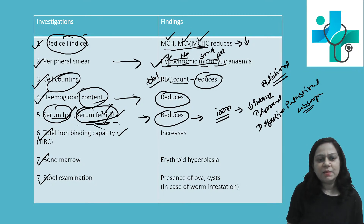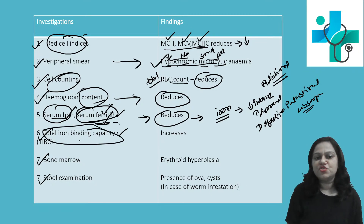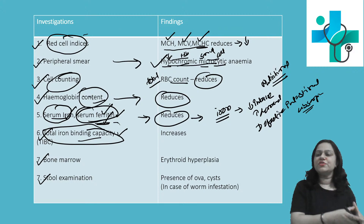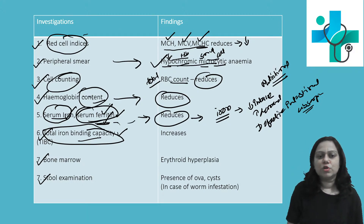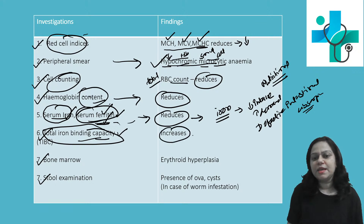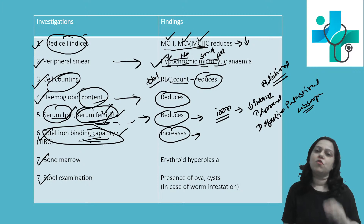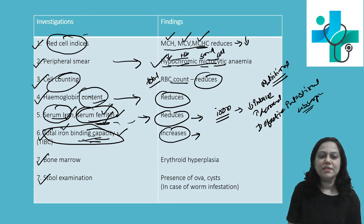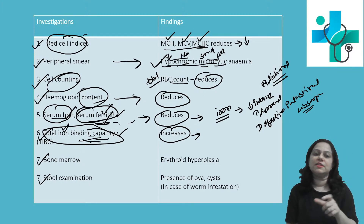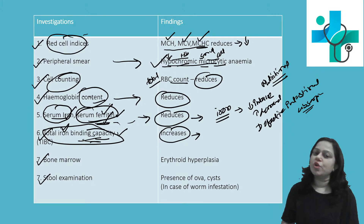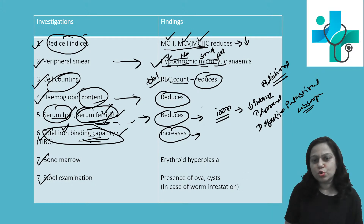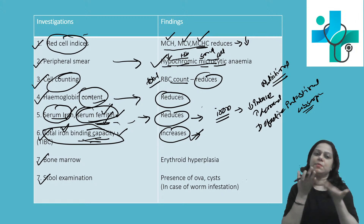Total iron binding capacity is a very important feature in differentiating iron deficiency anemia from other types of anemia. In iron deficiency anemia, total iron binding capacity will be more — increased. The reason is that more free binding sites are available since the amount of iron present in the blood is less. So total iron binding capacity increases while serum iron and serum ferritin levels are less.